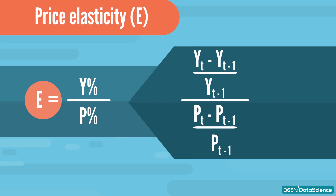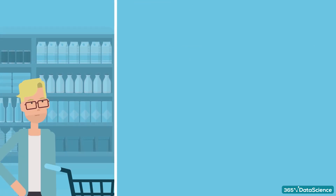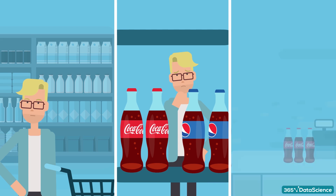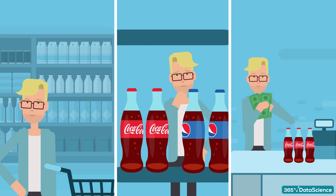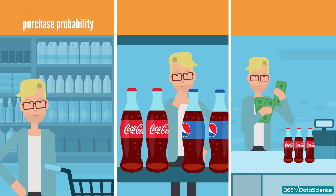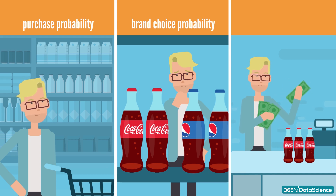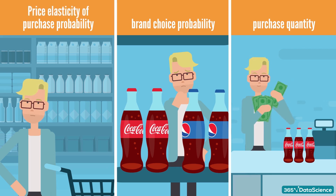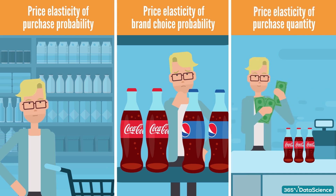Now let's tie price elasticity to the subject matter of our course. We are going to address three questions related to economic outcomes of interest: Will a customer buy a product from a particular product category when they enter the shop? Which brand is the customer going to choose? How many units is the customer going to purchase? These three questions boil down to the estimation of the following economic outcomes: 1. Purchase probability. 2. Probability for brand choice. 3. Purchase quantity. Naturally, we would be interested in price elasticities of each of these — price elasticity of purchase probability, price elasticity of probability for brand choice, and price elasticity of purchase quantity.